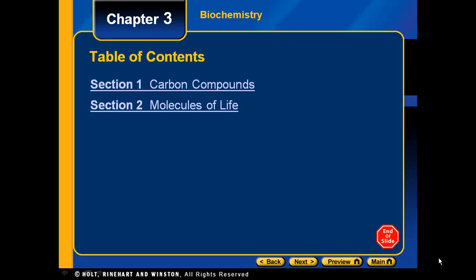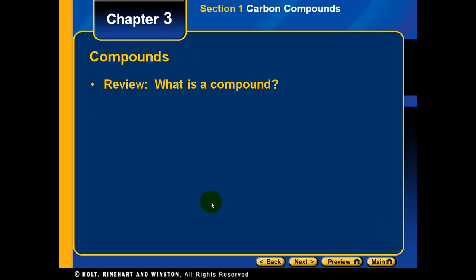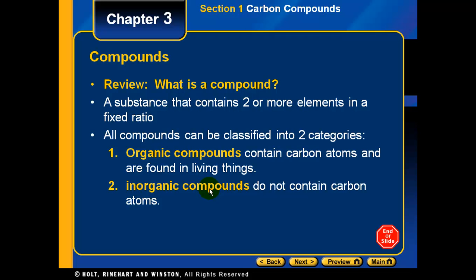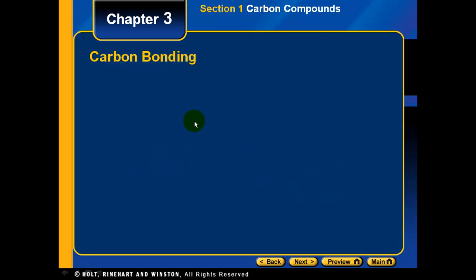This is the podcast for STEM Biology Chapter 3, Section 1, covering carbon compounds. First, let's review: a compound is defined as a substance that contains two or more elements in a fixed ratio, like H2O. We'll be more concerned with organic compounds. There are two types: organic compounds, which contain carbon atoms and are found in living things, and inorganic compounds, which do not contain carbon atoms.